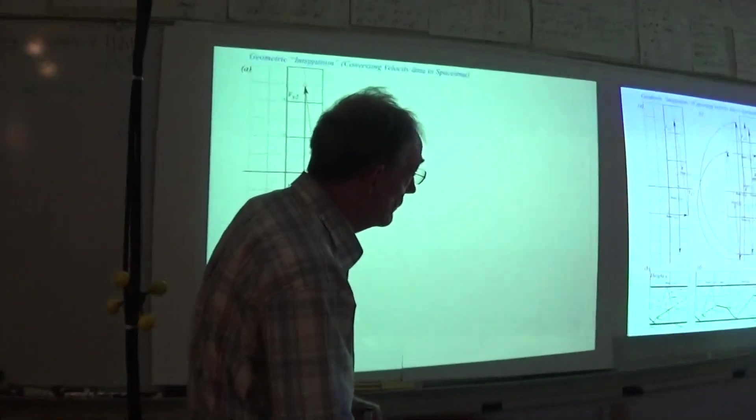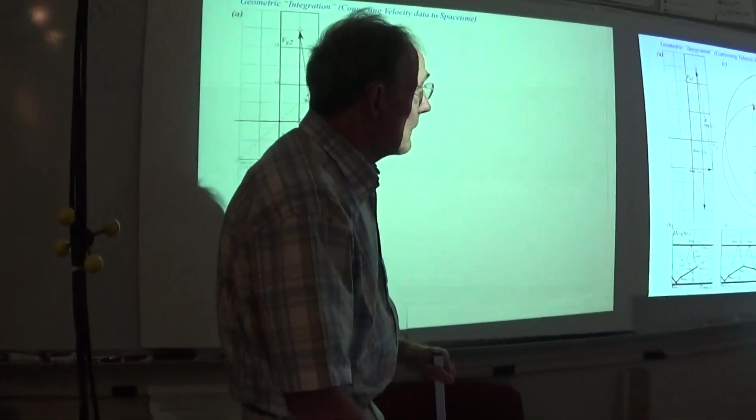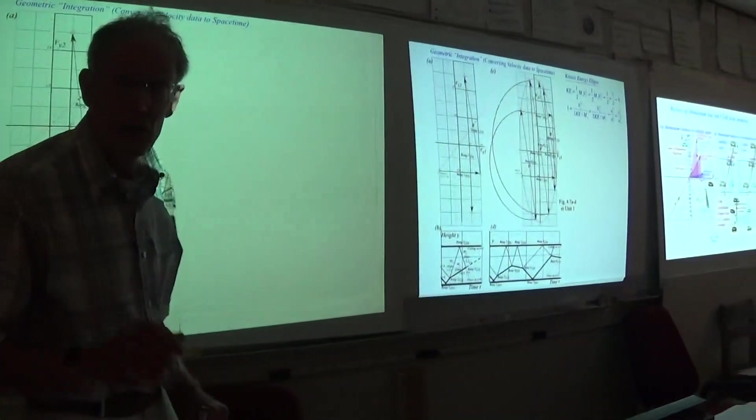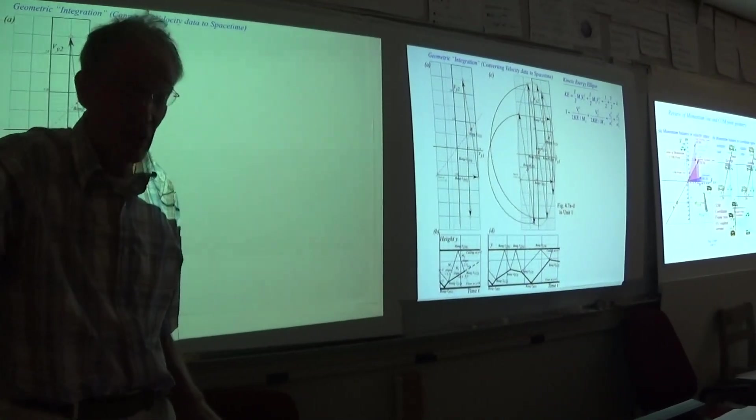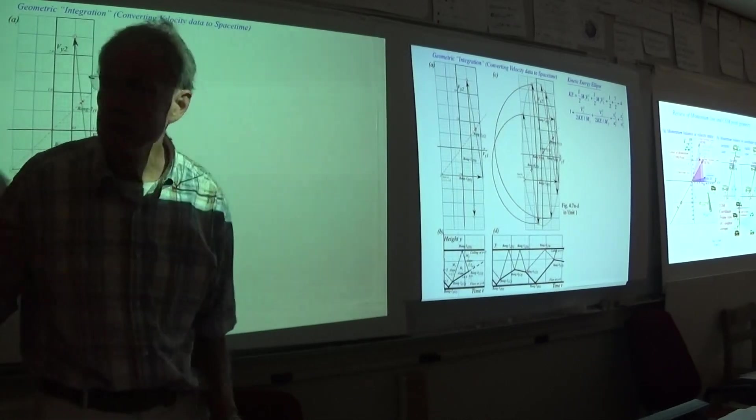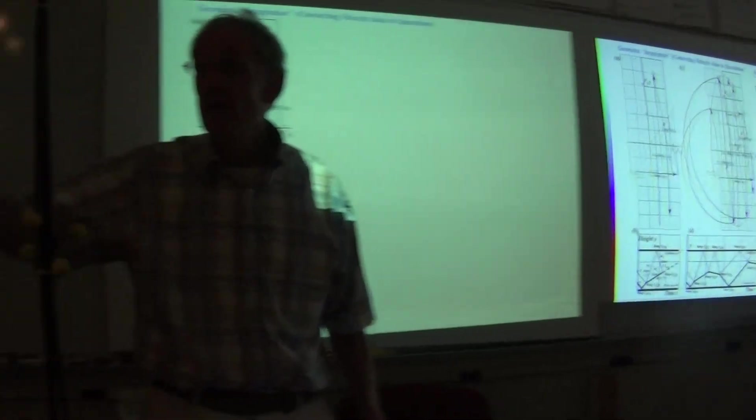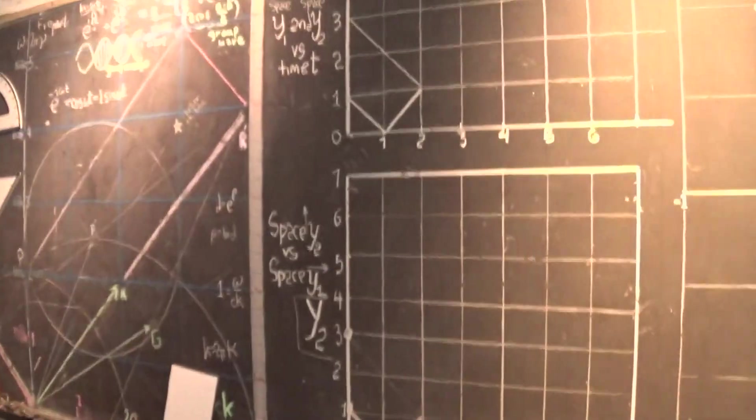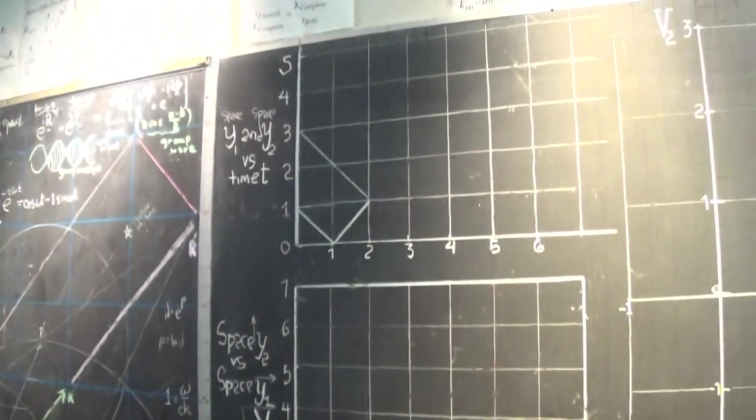Because the other thing we'd like to see is what does it look like in velocity velocity space? I'm sorry, in space space, what does it actually look like? There, this is velocity velocity, there's space space, then there's space time. So those are the three things that classical mechanics works with.